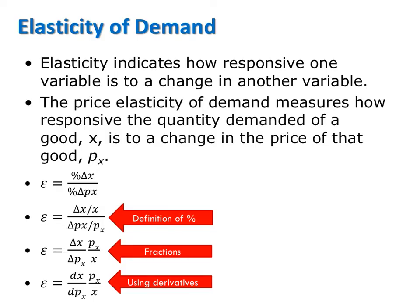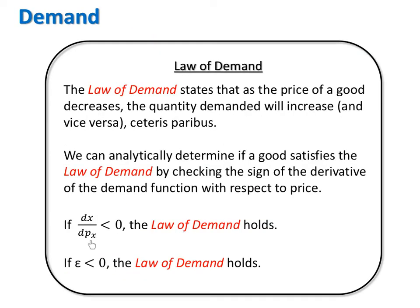So that means elasticity of demand is part derivative — or slope of the demand — and part ratio of the price and quantities at which we are calculating elasticity. Because price and quantity are always positive, the sign of elasticity of demand depends entirely on the sign of its derivative component. Therefore, when dx/dpx is negative, elasticity of demand is also necessarily negative, revealing once again that the Law of Demand holds.